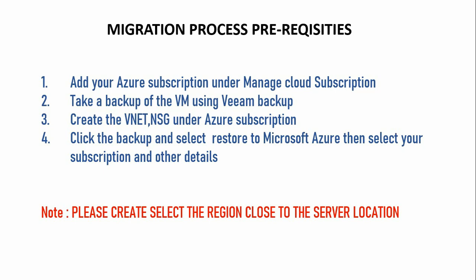Let's first know the steps for the migration process. You have to add your subscription under Manage Cloud Subscription in Veeam Backup software. Then you need a backup of the VM. You have to create the Veeam NSG, public IP, and resource groups in the Azure subscription. Then select your backup and restore to Microsoft Azure — you can do the same process for AWS and GCP.